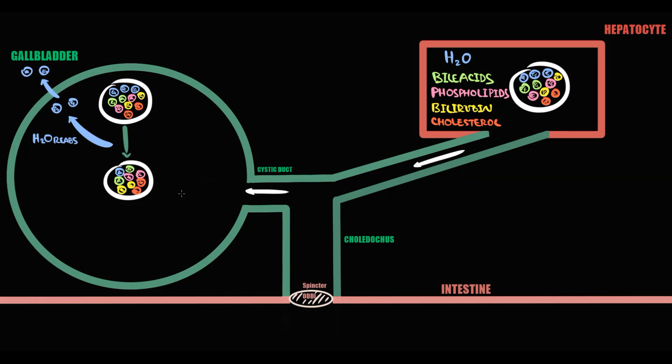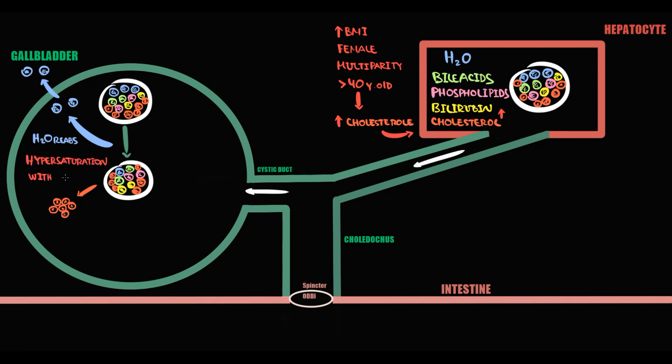Let's take for example cholesterol stones. We have a female patient with obesity that has a lot of children and is older than 40. All these factors increase the amount of cholesterol in the blood and thereby the amount of cholesterol in the bile. Such bile with very high cholesterol comes to the gallbladder. After water reabsorption the concentration of cholesterol becomes extremely high. Such state we call hypersaturation with cholesterol, and in this state gallstones are formed very rapidly.